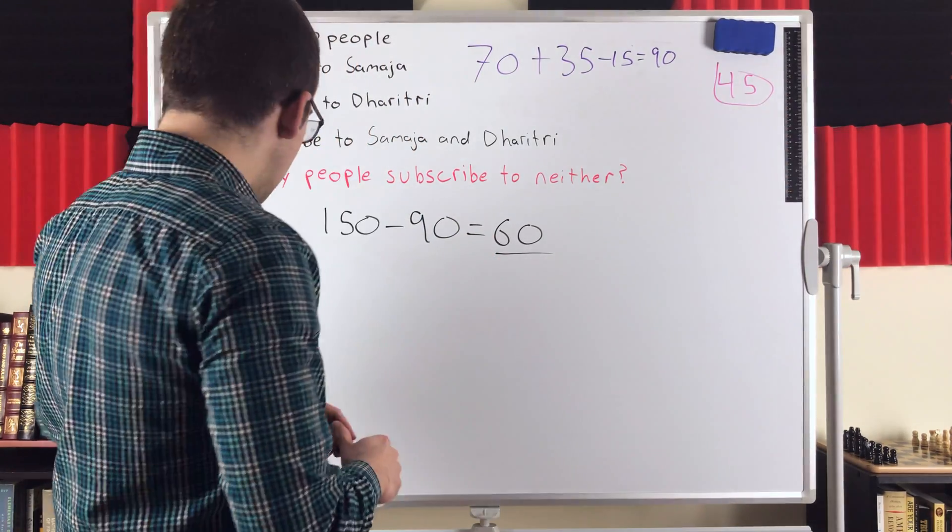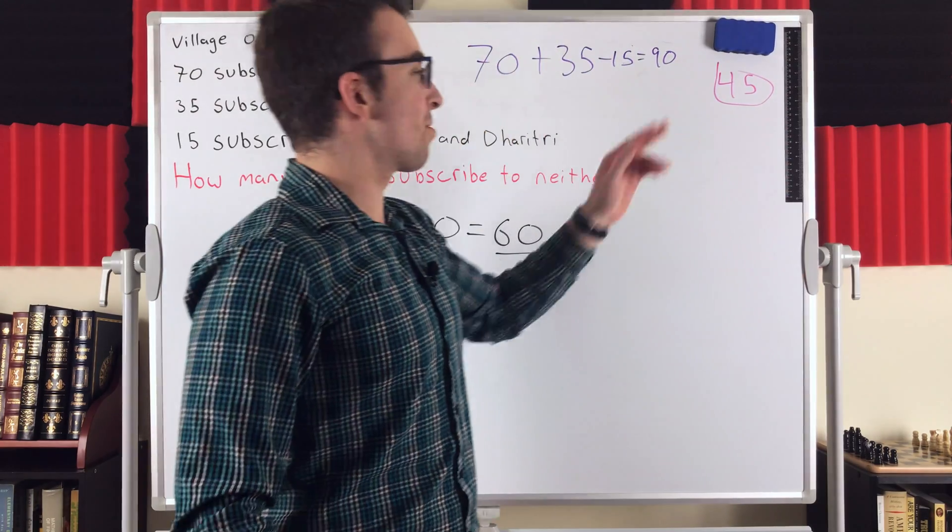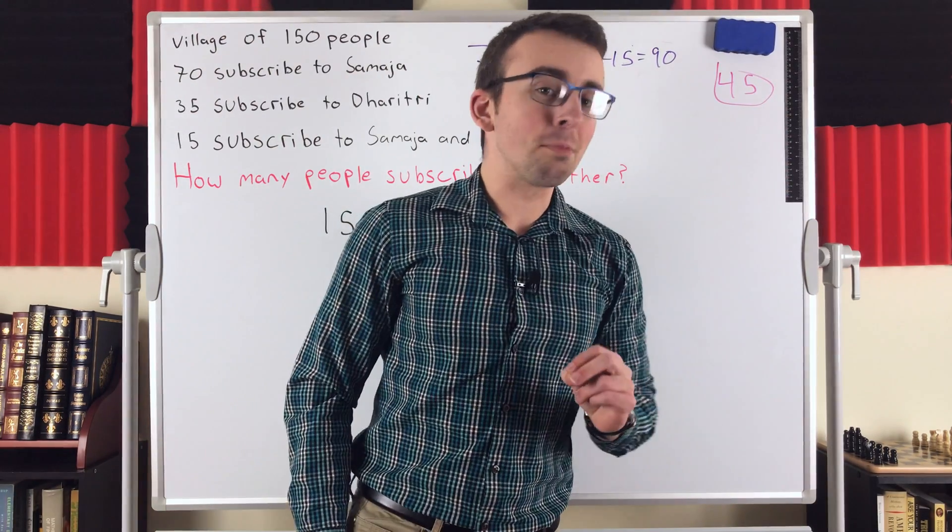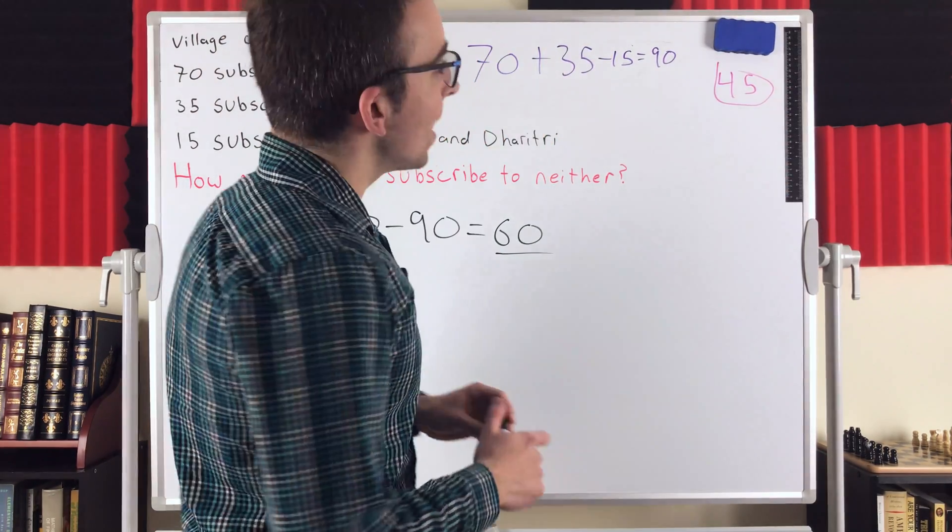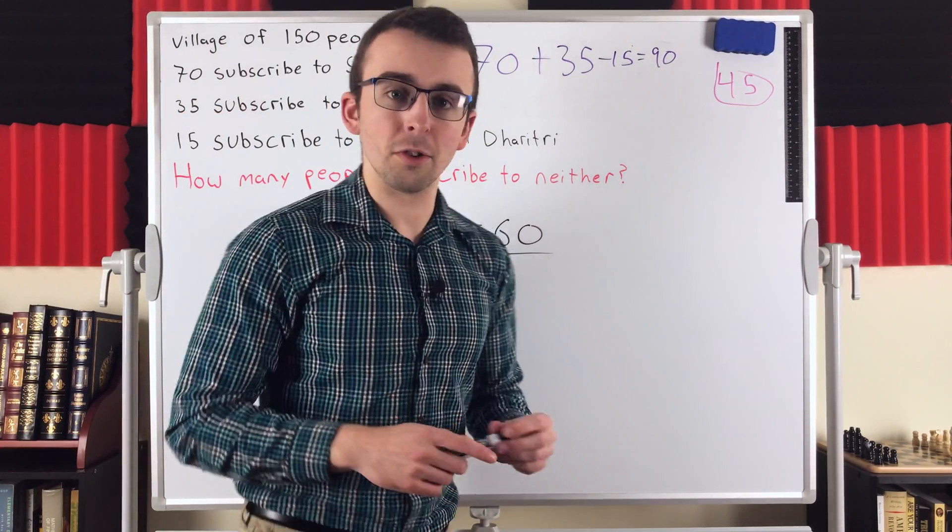We can see the actual answer is not super close to the answer we got at first. So that was pretty darn wrong. Again, this is a specific example of what's called the inclusion-exclusion principle.